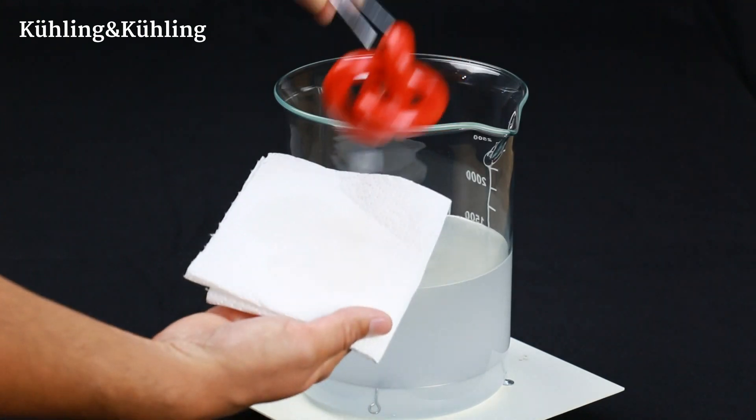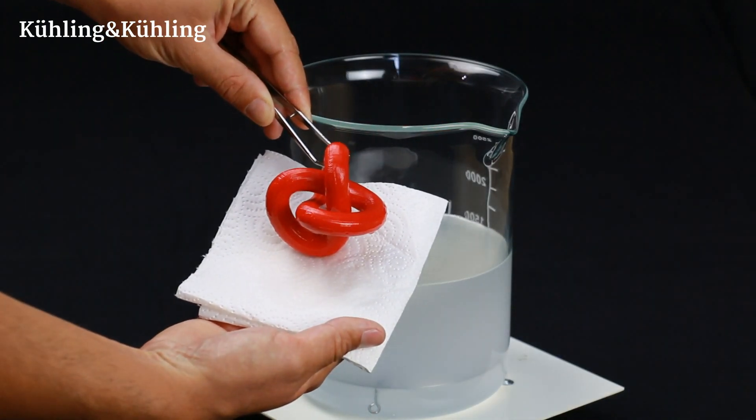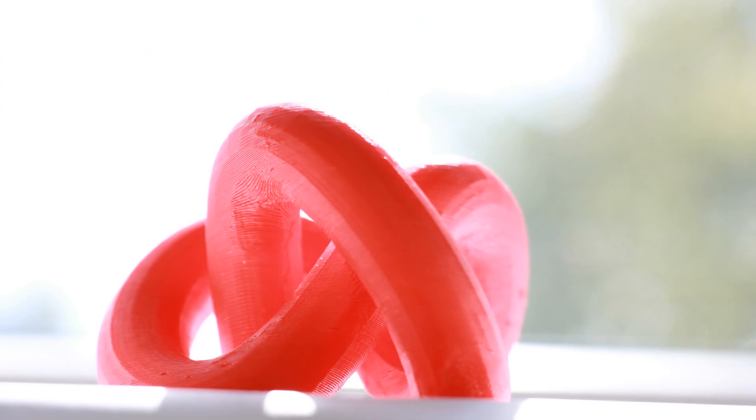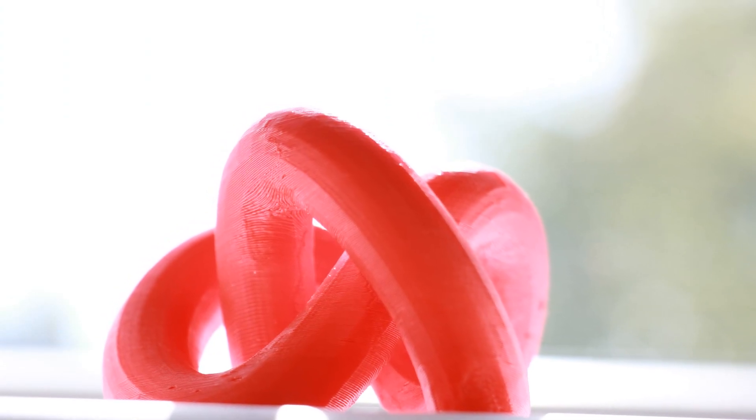When all remaining HIPS has been dissolved, remove the model from the bath, briefly dry it with a paper towel and leave it in a warm and ventilated place to dry completely.